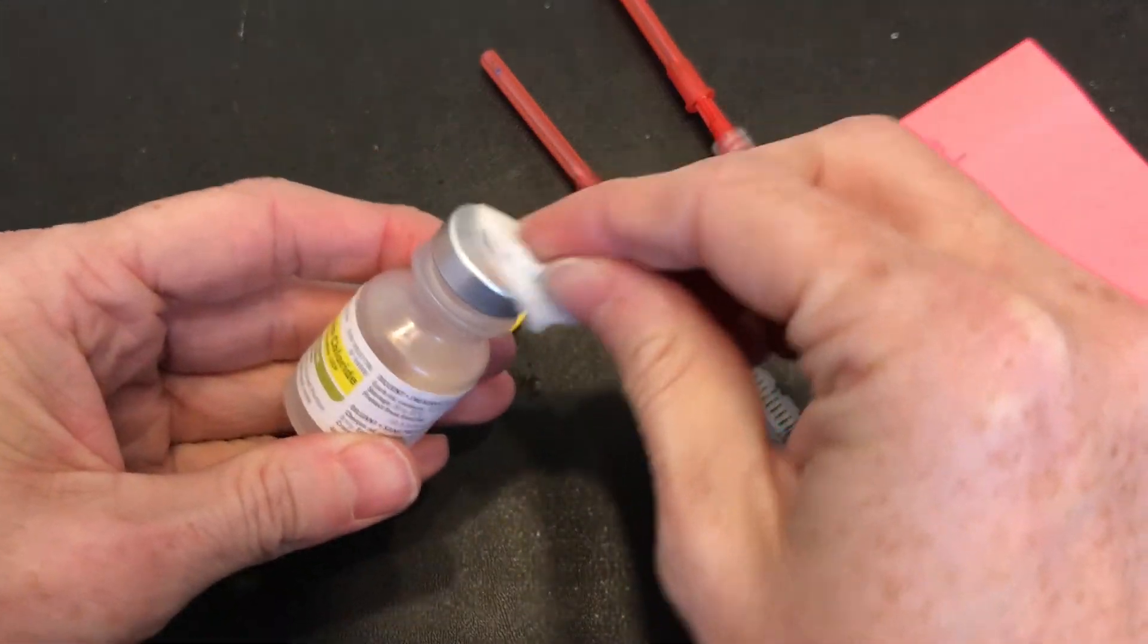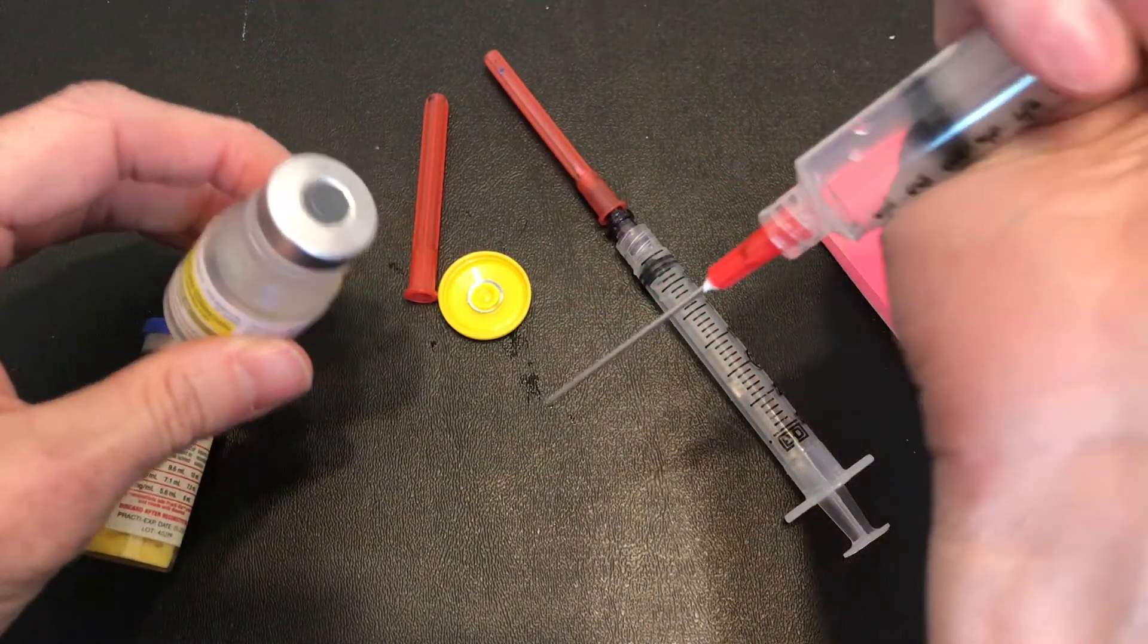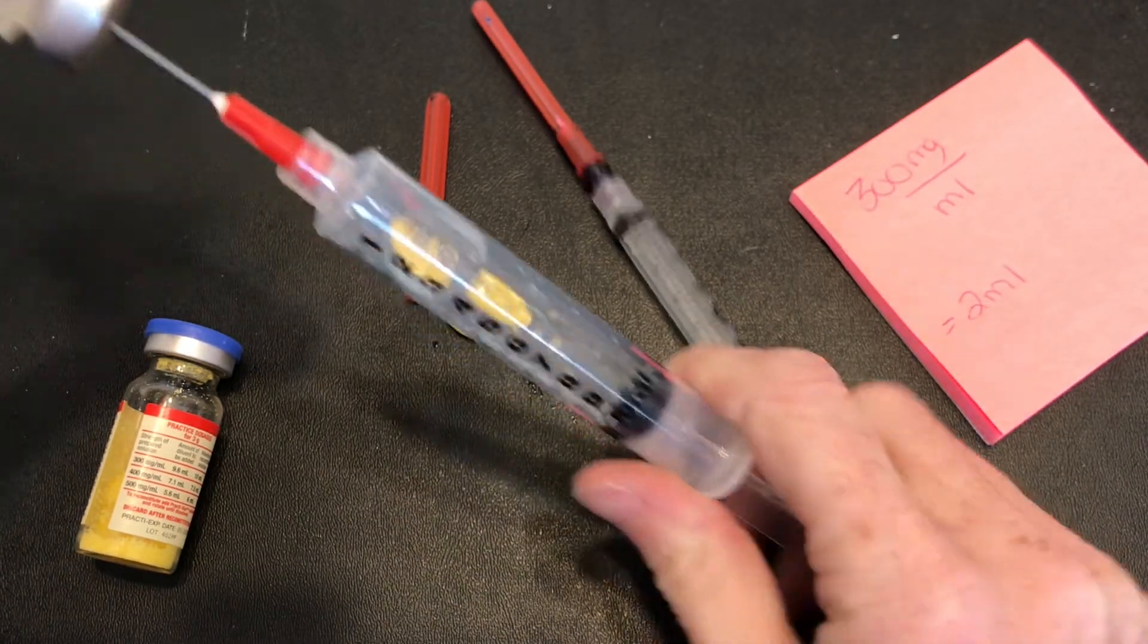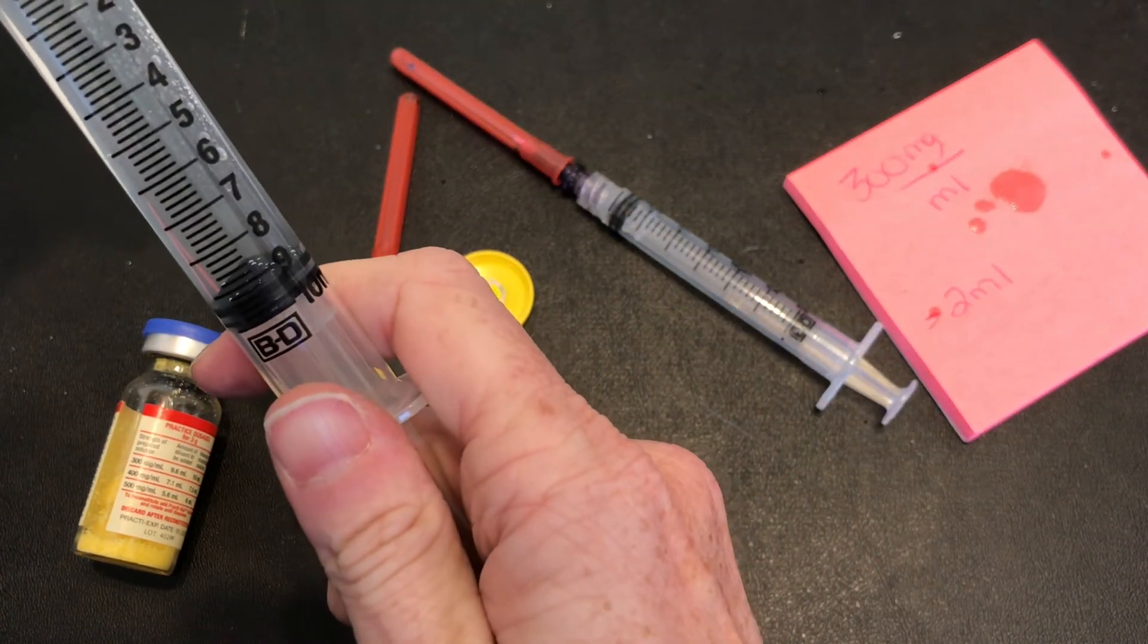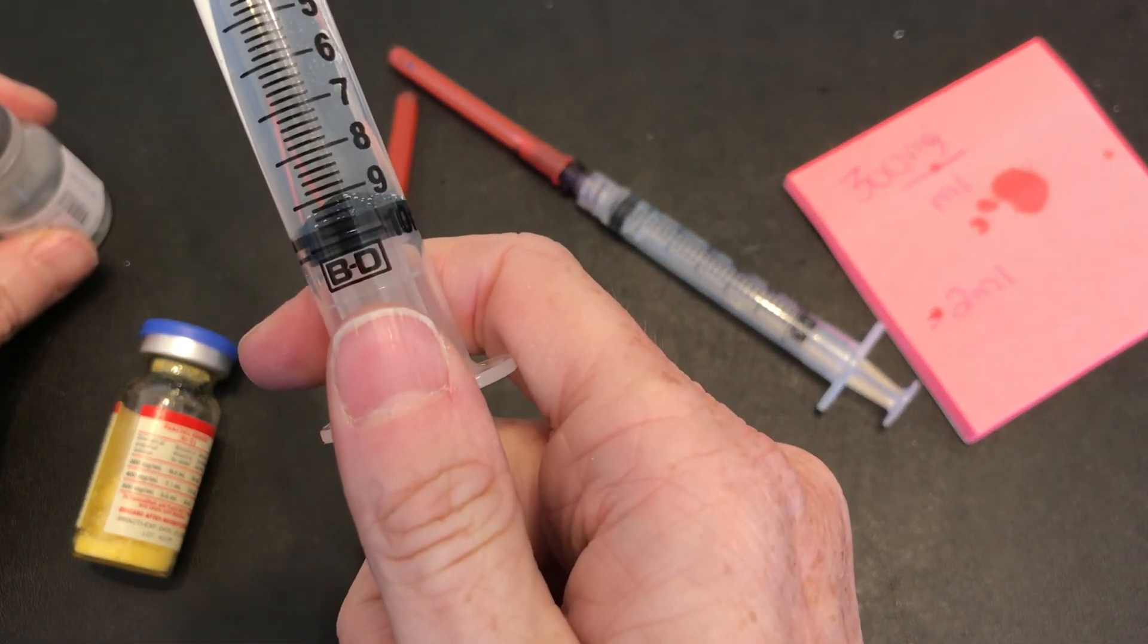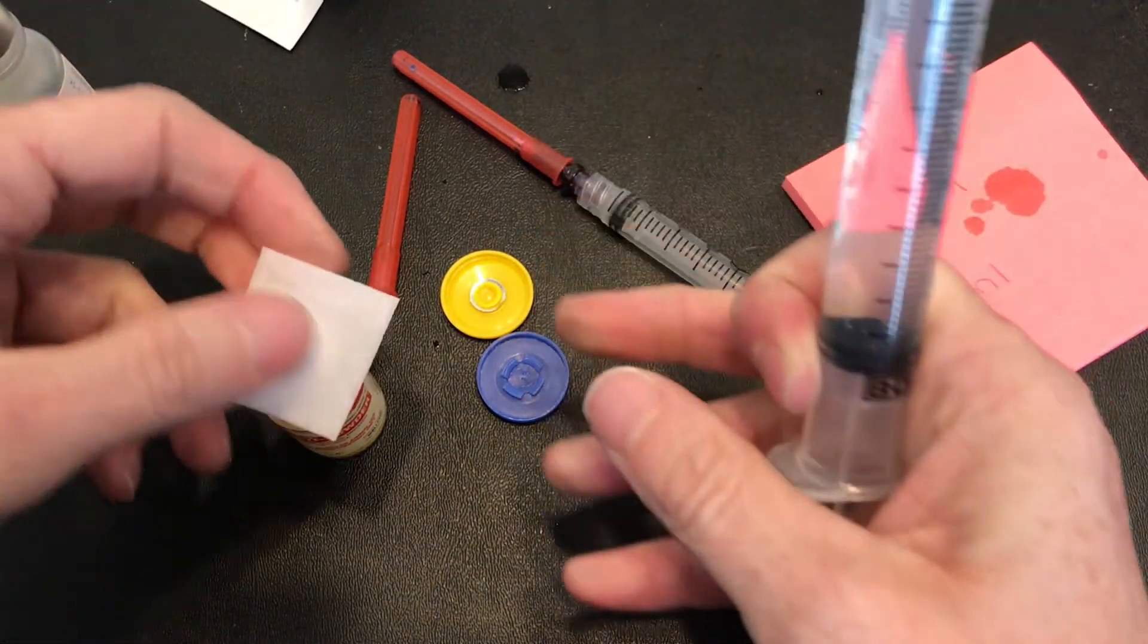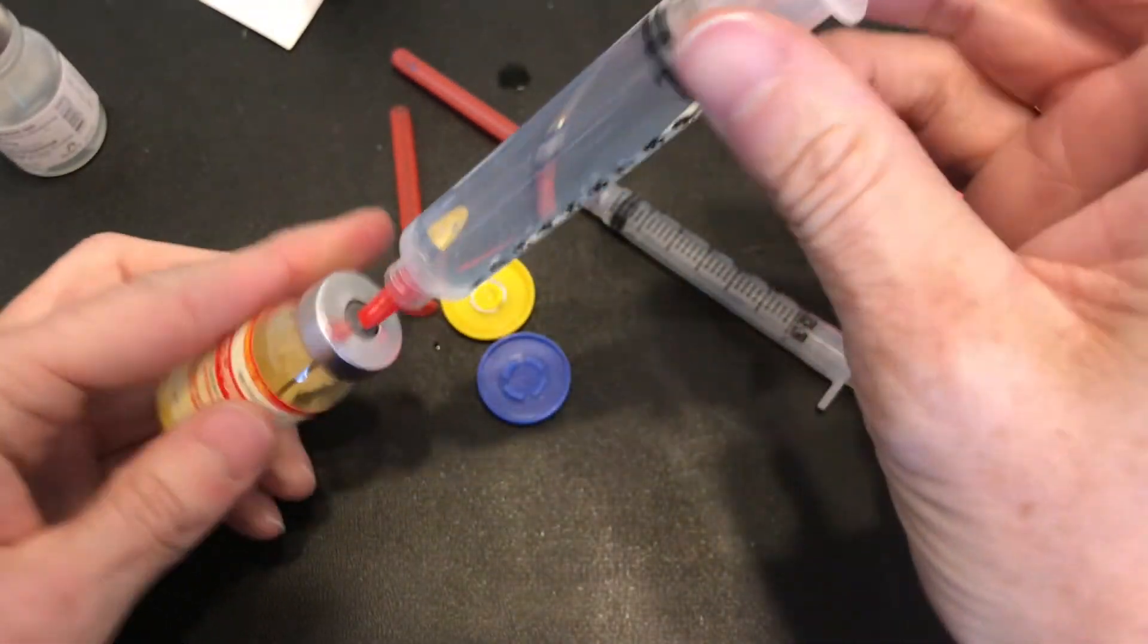So going to my vial I now know I need 9.6 mls of a diluent. So I have my diluent. You still need to clean the top before accessing. I've grabbed a 10 cc syringe, put my air in, and now I'm going to draw 9.6 mls of saline. Be sure to get rid of your air. 9.6 mls of saline.